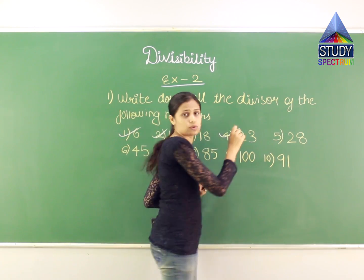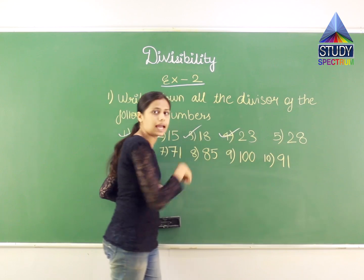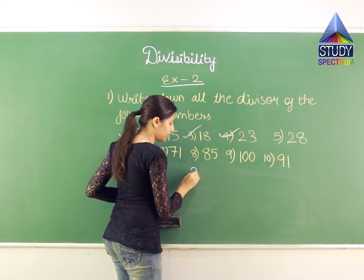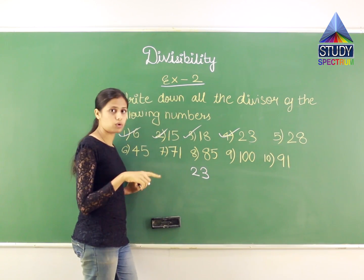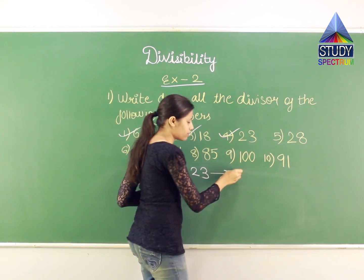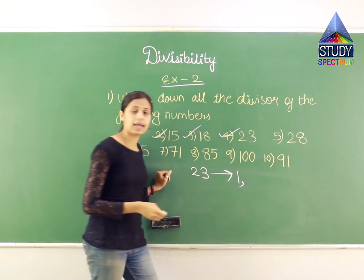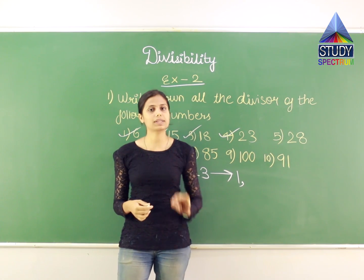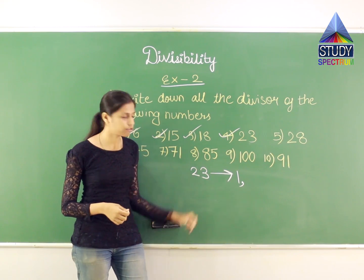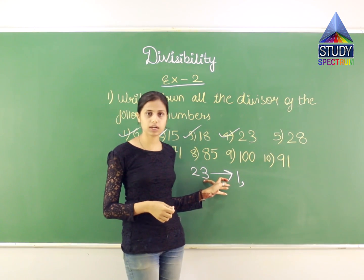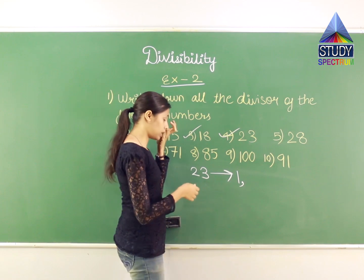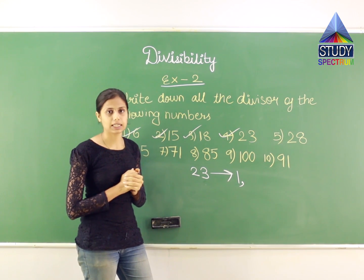Now let us start with the fourth question. In this question I have 23, and we will find all the possible divisors for 23. As I already told you, 1 is a divisor for all numbers, so for 23 I have 1 as a divisor. Then we will check for 2: for 2 to be a divisor, the number should have an even digit at the end. For 23, I have 3 at the end, which is not even. So 2 is not a divisor for 23.